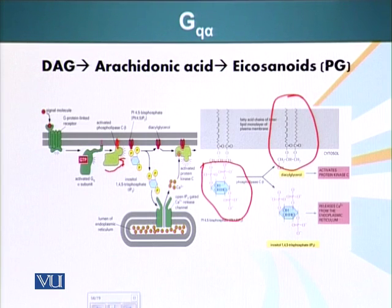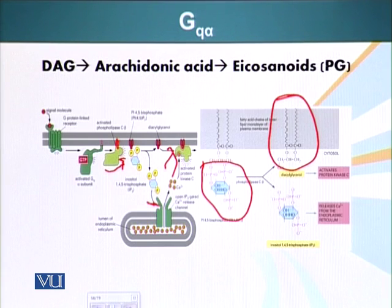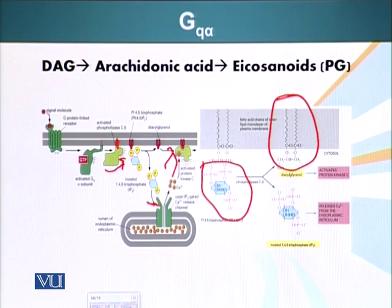Protein kinase C, in order to translocate to the plasma membrane, must first bind calcium ions. The calcium ions are released from the endoplasmic reticulum when inositol triphosphate binds ion channels on the ER surface, opening the channel. Calcium is released, binds protein kinase C, causing a conformational change, and it moves to the inner surface of the plasma membrane and attaches to DAG, becoming activated.